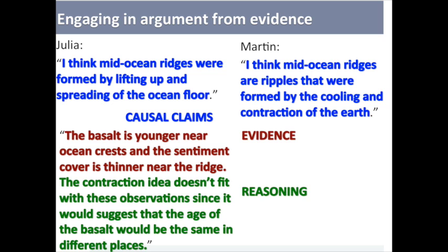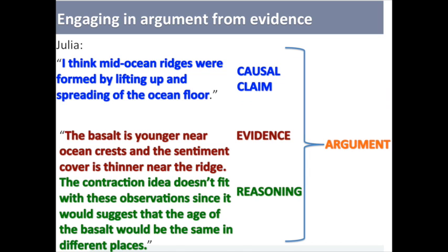Julia's claim, evidence, and reasoning constitute an argument. Her argument would be more complex if she included more evidence and reasoning and critique of the competing explanation. In her argument, only the causal claim is the explanation, and until the argument is accepted, the explanation remains tentative.